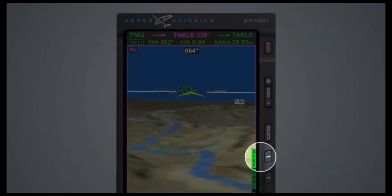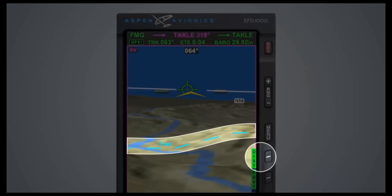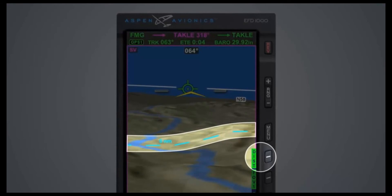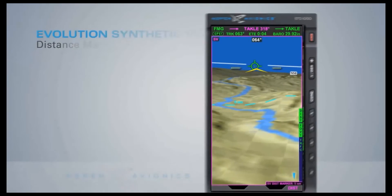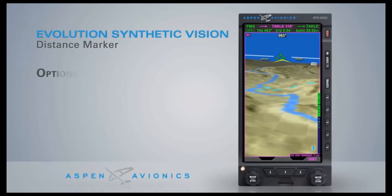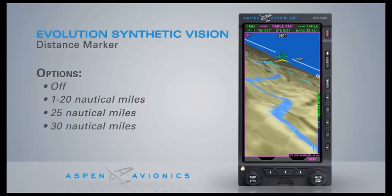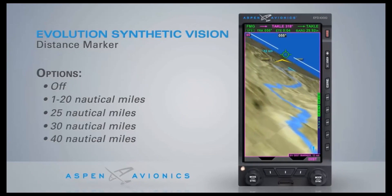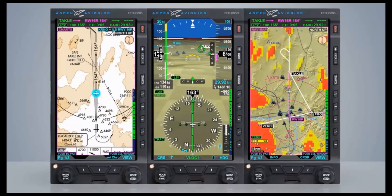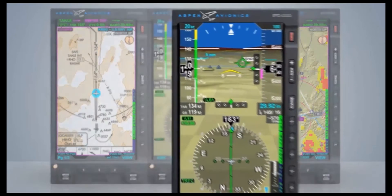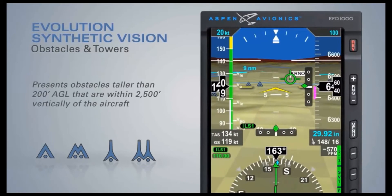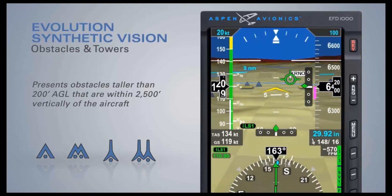The distance hotkey presents a cyan dashed line representing the ground distance ahead of the aircraft. The distance options are off, 1 through 20 nautical miles, 25, 30, and 40 nautical miles. Three-dimensional obstacle symbols are presented on all synthetic vision views. ESV presents all obstacles taller than 200 feet AGL that are within 2,500 feet vertically of the aircraft altitude.